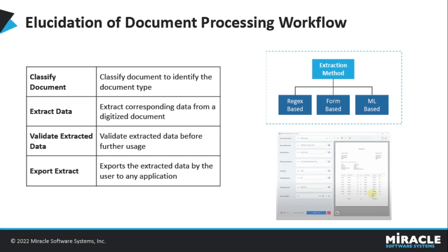This is the main step in the document processing workflow. At present we have three kinds of extraction methods: regex-based, form-based, and ML-based. The regex-based method uses regular expressions to extract corresponding attributes from the document. The form-based extraction method is used to handle documents with fixed formats, requiring you to define a template for each document type. The machine learning-based extractor uses an external web service to identify the required fields from the documents.